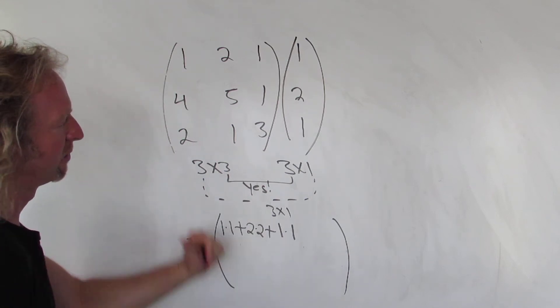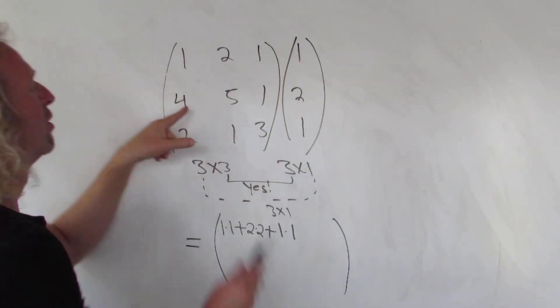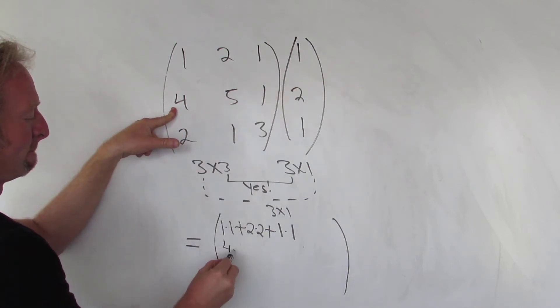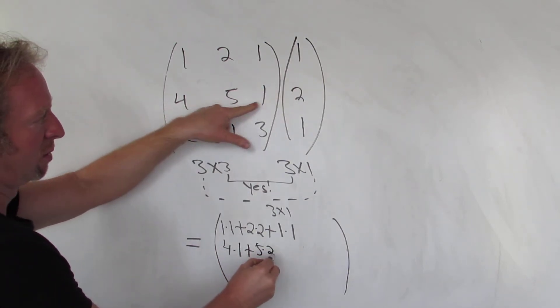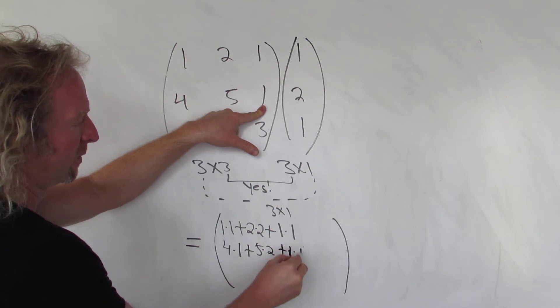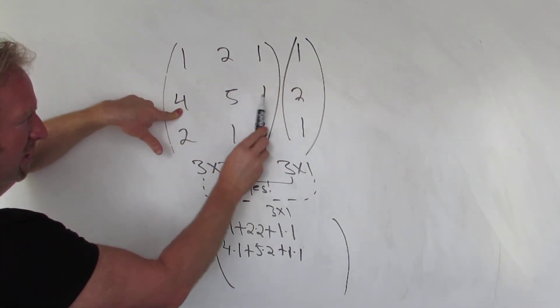Now we want the second row, first column. So we use the second row, first column. So 4 times 1, plus 5 times 2, plus 1 times 1. All right, 4 times 1, 5 times 2, 1 times 1, there it is.